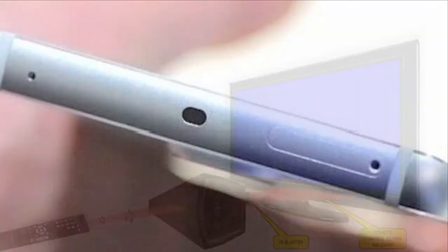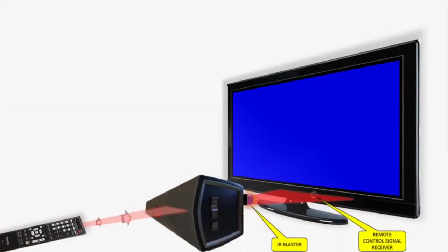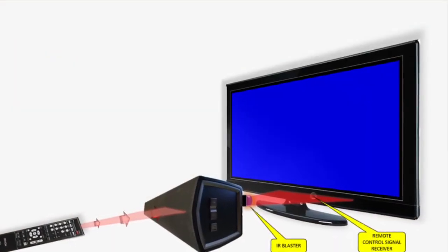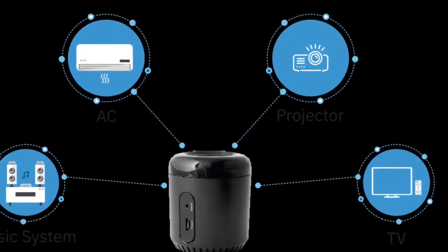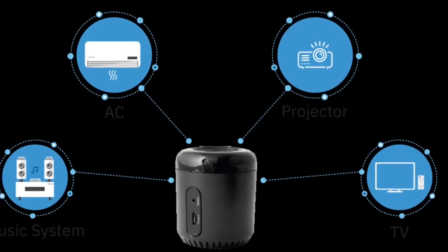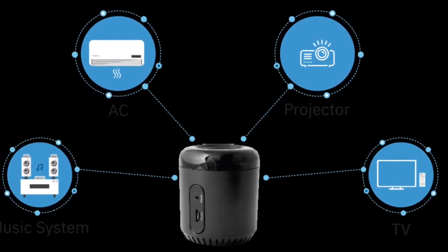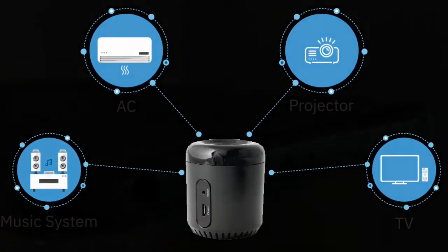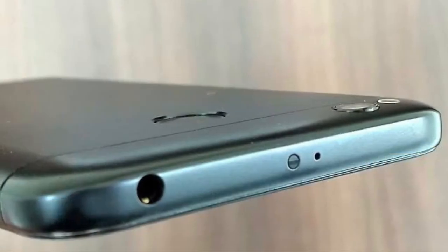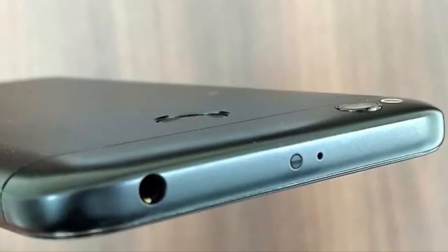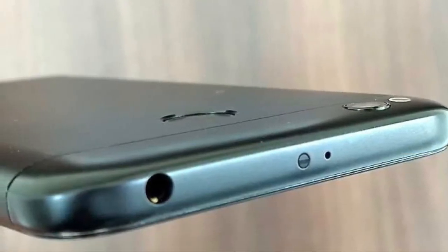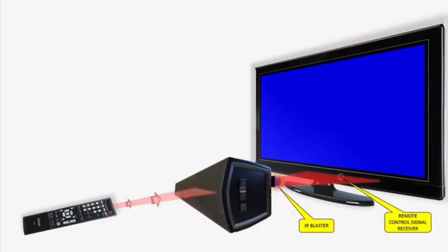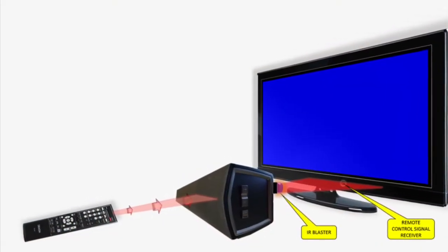If you are using mobile phones, you can use a phone with IR Blaster. You can use a phone with IR Blaster or TV remote.